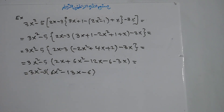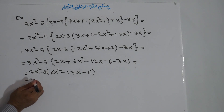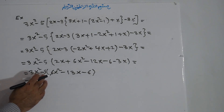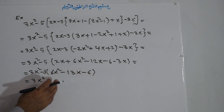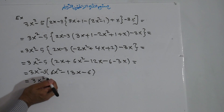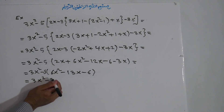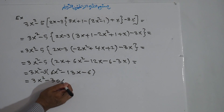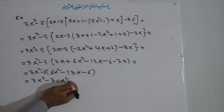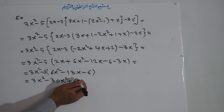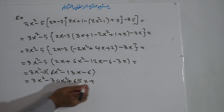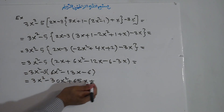Now we multiply negative 5 through the bracket. Negative times positive is negative: 5 times 6 gives 30, so negative 30x². Negative times negative is positive: 5 times 14 gives 65x, so positive 65x. And negative times positive: 5 times 6 becomes 30, so negative 30. We still have the minus 3x term outside.